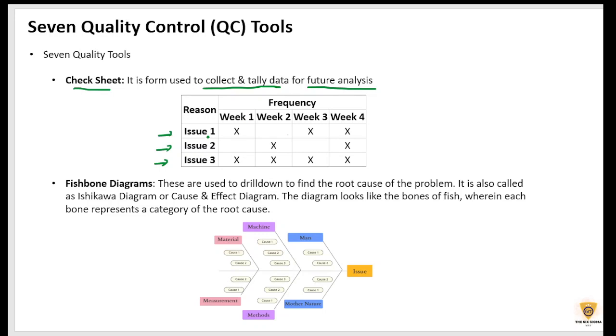So for example, week 1, issue 1 came, then week 3 came, then week 4 came, right? Like issue 2, issue 3, right? So this is a check sheet that we have in place.